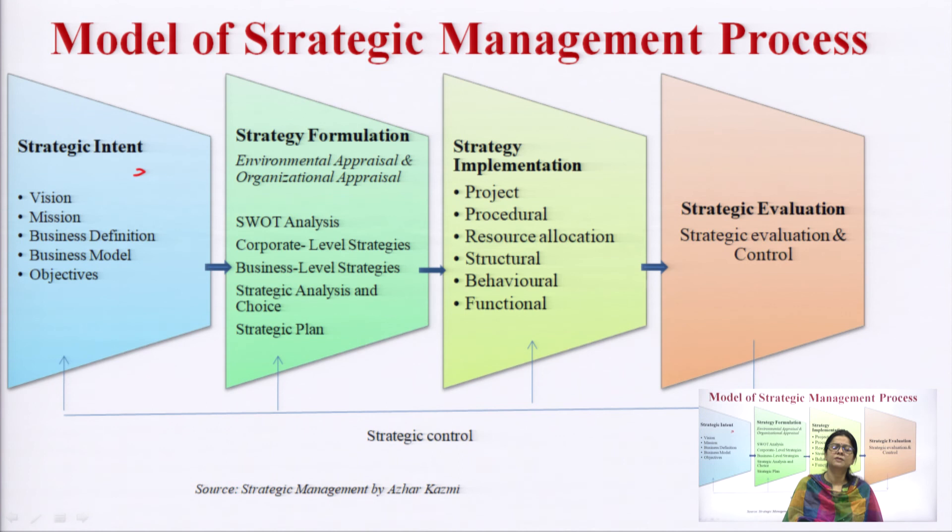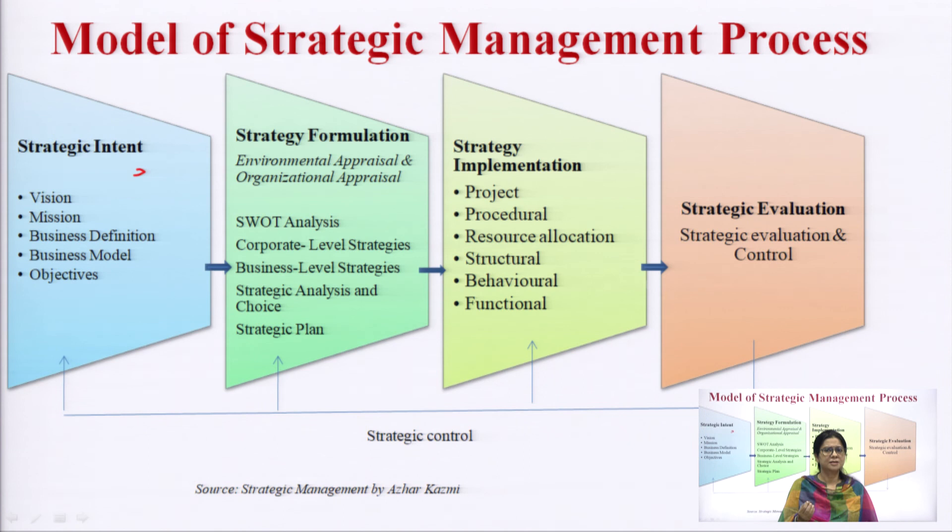The third element is alternative technologies. Using the example of a watch, alternative technologies can include a manual watch, an automatic watch, an analog watch, a digital watch, or battery-operated options. So business definition relates three areas: customer group, customer function, and alternative technologies.